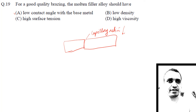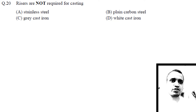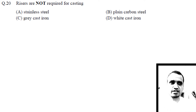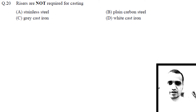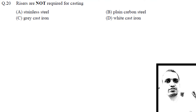The answer is option A. Next: risers are not required for which casting? A riser is not required where shrinkage is very less. In the case of gray cast iron, the shrinkage is effectively positive — it does not shrink but expands due to the formation of graphite. The free graphite has a larger volume, so it increases the overall volume. The correct answer is gray cast iron.